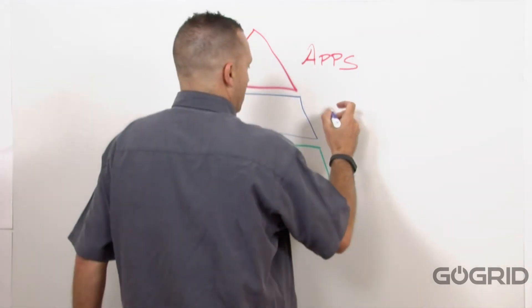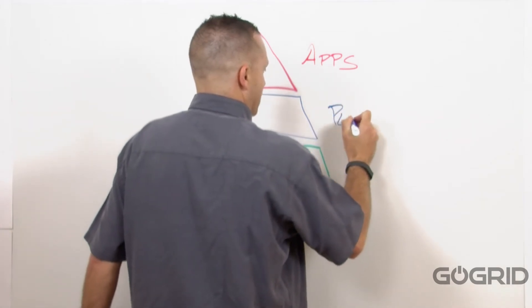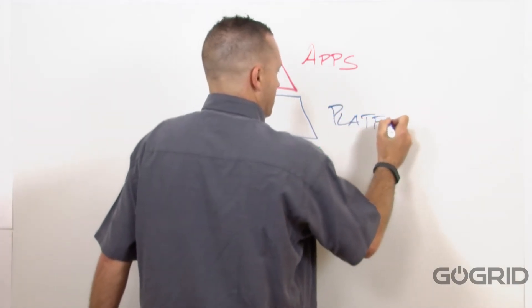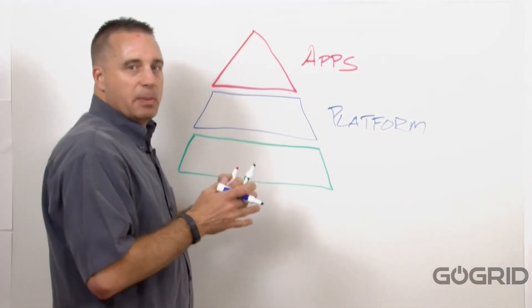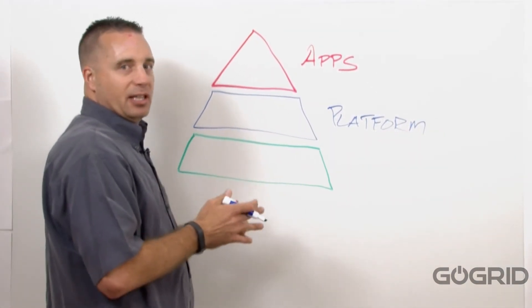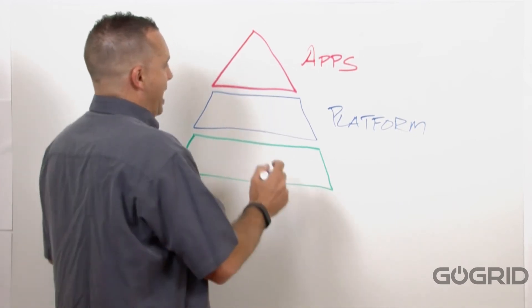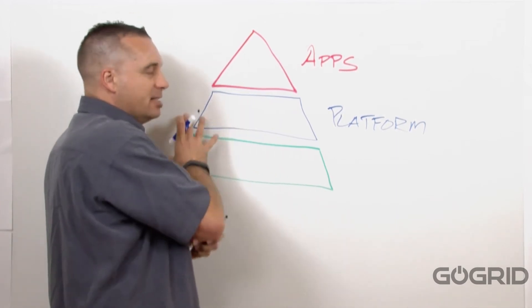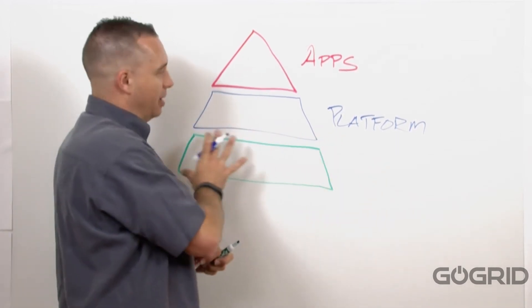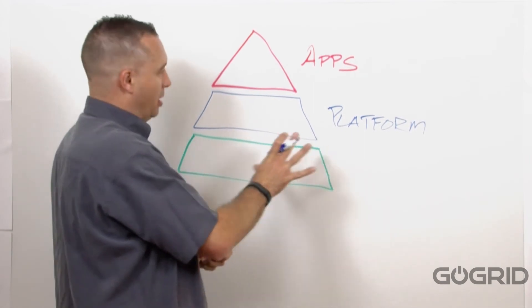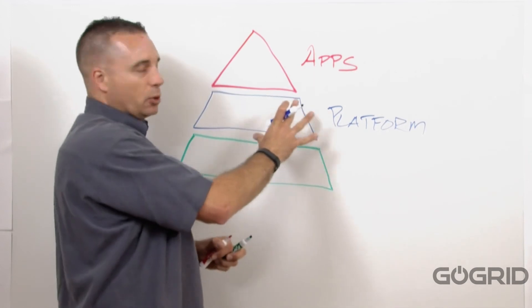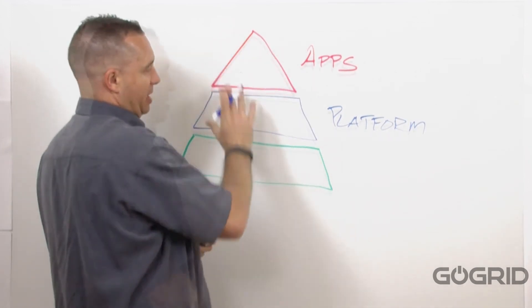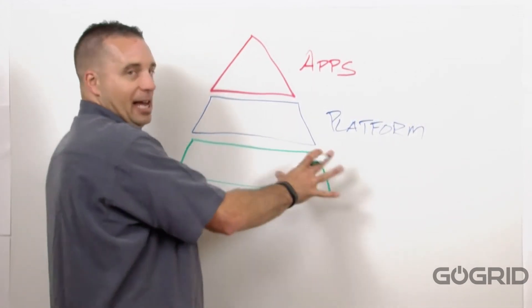Then at the next layer, we call cloud platforms. At the platform layer, you're exposed to different types of frameworks like Java or Ruby, and you're still isolated away from the underlying operating system, which I'll go into, and the raw infrastructure, but you're given much more control than you are at the application layer. Let's move down to this last layer here.